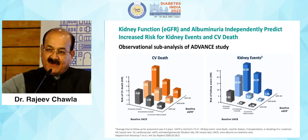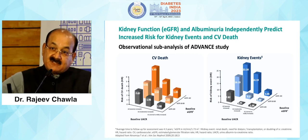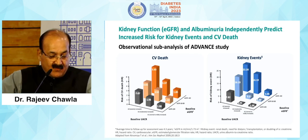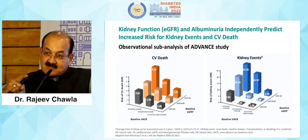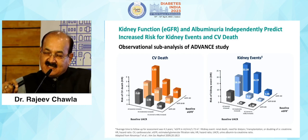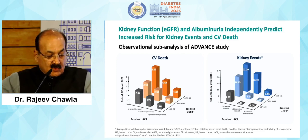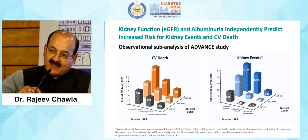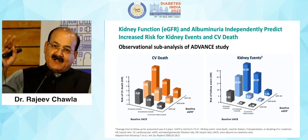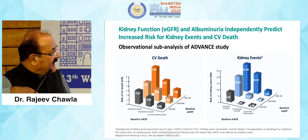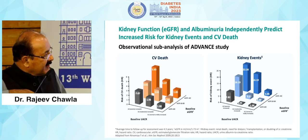Kidney function as measured by eGFR is critical. These days we have a lot of apps, and it is mandatory before writing a prescription that you find out what is the eGFR of that patient, because based on that you choose the drugs and calculate the doses. Today we know eGFR and albuminuria independently predict increased risk for kidney events as well as CV death — albuminuria increasing more than 30 toward 300 milligram or eGFR falling less than 60.